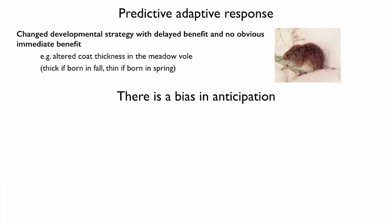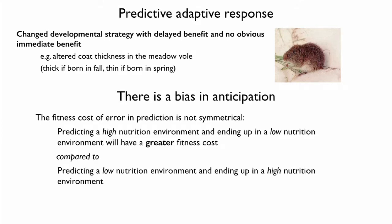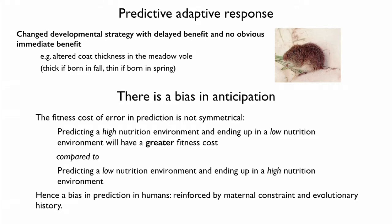There is a bias in this kind of anticipation — the fitness cost of making a mistake is not symmetrical. If a high-nutrition environment is predicted but the organism ends up in a low-nutrition environment, there will be a greater fitness cost than if a low-nutrition environment is predicted and a high-nutrition environment comes along. Therefore, one would expect a bias in the way evolution has shaped this predictive response, probably reinforced by maternal constraint and the pattern of nutrition in evolutionary history.